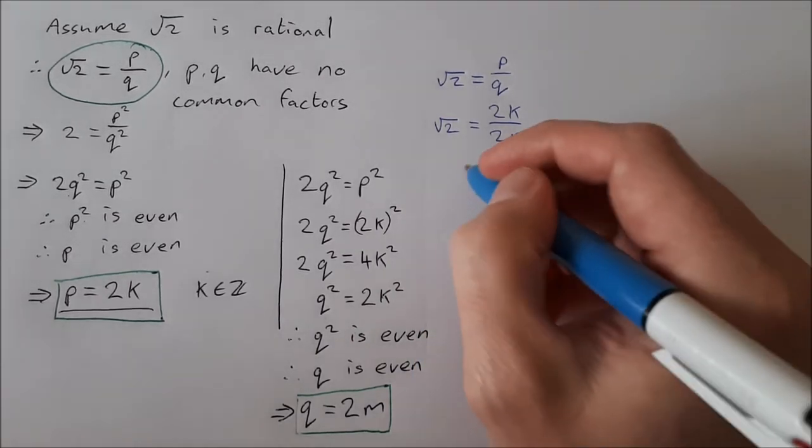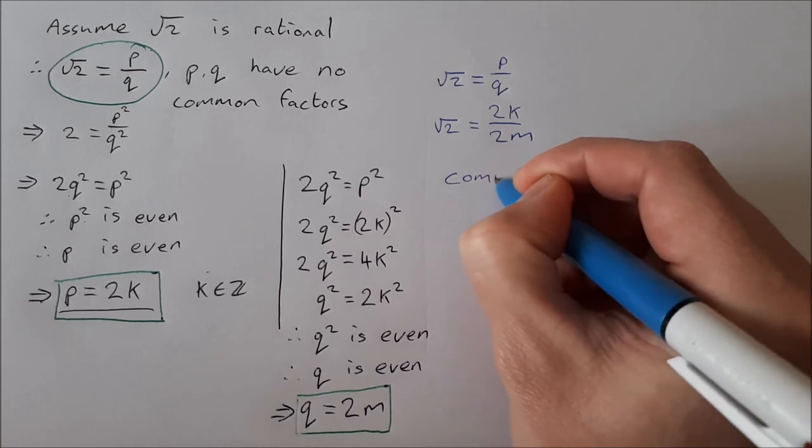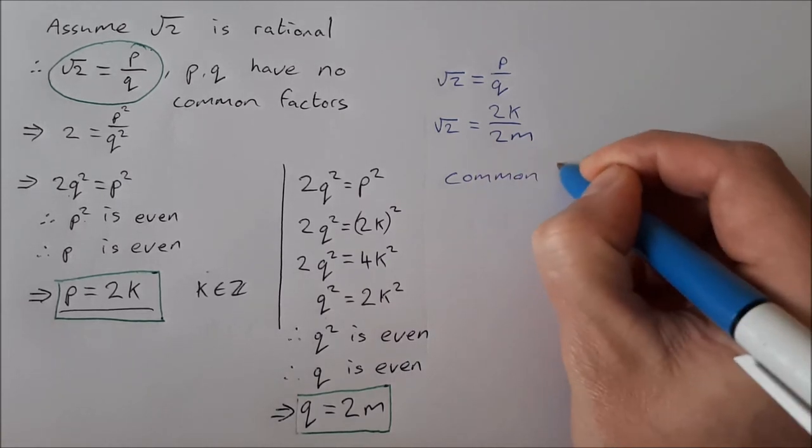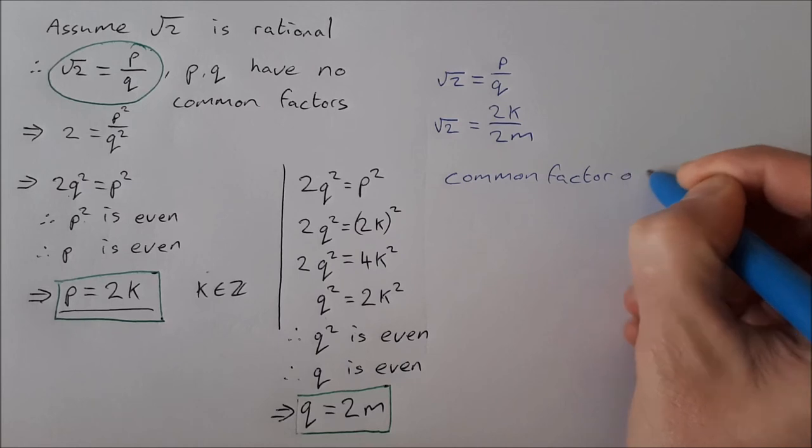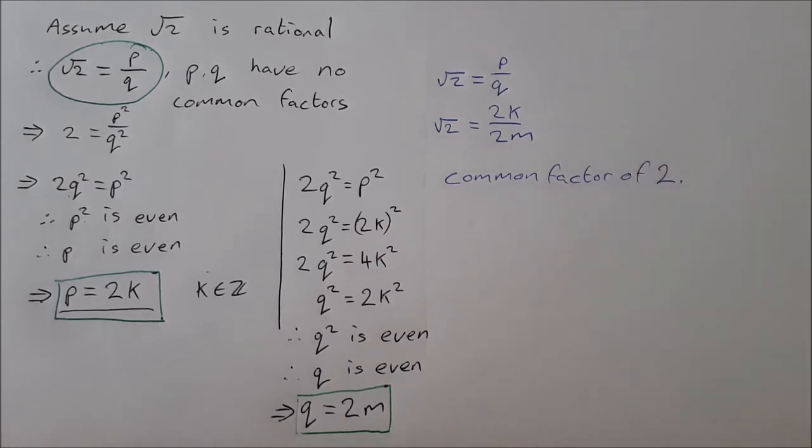That means the square root of 2 is equal to 2k over 2m. Now we have a common factor, so it's a common factor of 2, and that is a contradiction.